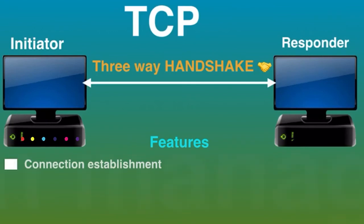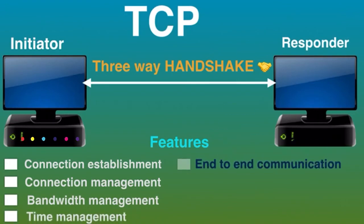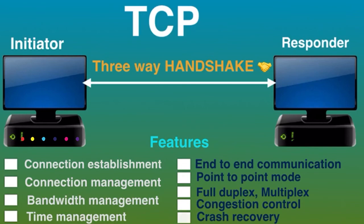Some important features of TCP include: connection establishment, connection management, bandwidth management, time management, end-to-end communication, point-to-point mode, full duplex and multiplex service, and congestion control and crash recovery. A drawback of TCP is that it cannot be used for broadcast and multicast connections.